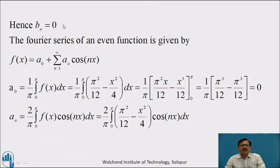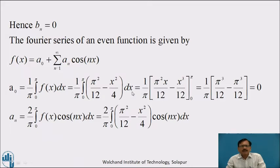Since f(x) is even, bₙ = 0. The Fourier series is f(x) = a₀ + Σ(n=1 to ∞) aₙ cos nx. Now a₀ = (1/π) ∫₀^π f(x) dx = (1/π) ∫₀^π (π²/12 − x²/4) dx = (1/π) [π²x/12 − x³/12] from 0 to π = (1/π)(π³/12 − π³/12) = 0.